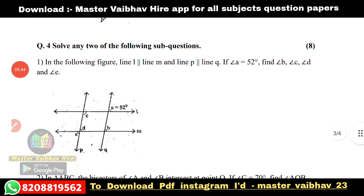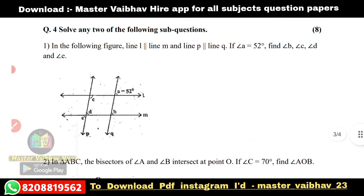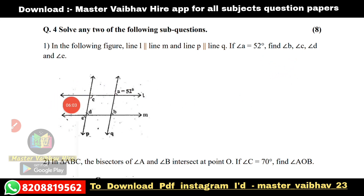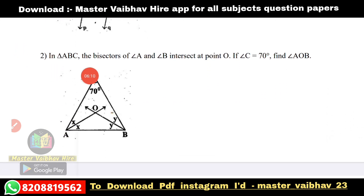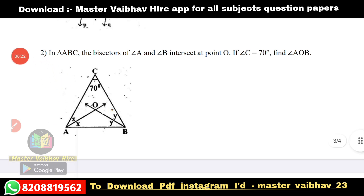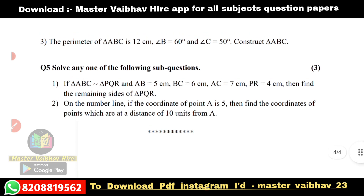Question 4 — solve any two of the following sub-questions. Three questions are given. First: in the figure, line L is parallel to line M and line P is parallel to line Q; if angle E is equal to 52 degrees, find angles B, C, D, and E. Second: in triangle ABC, the bisectors of angle A and angle B intersect at point O; if angle C is equal to 70 degrees, find angle AOB. Third: the perimeter of triangle ABC is 12 cm, angle B is equal to 60 degrees, angle C is equal to 50 degrees — construct triangle ABC.